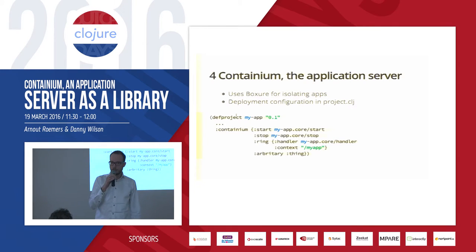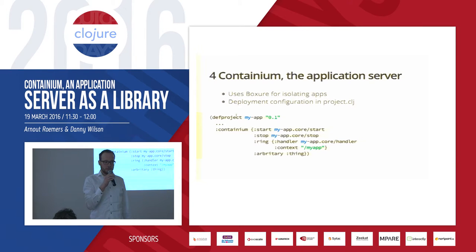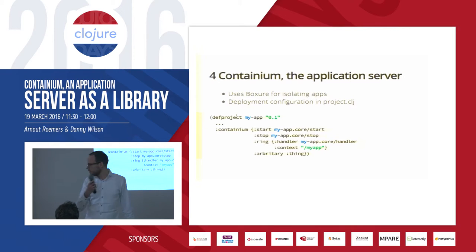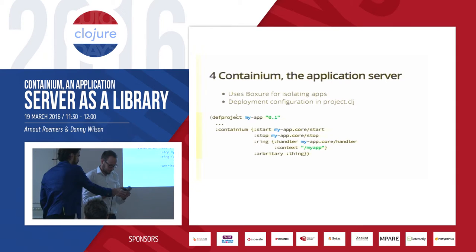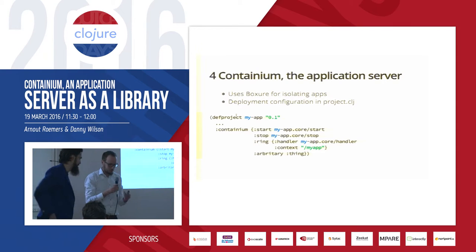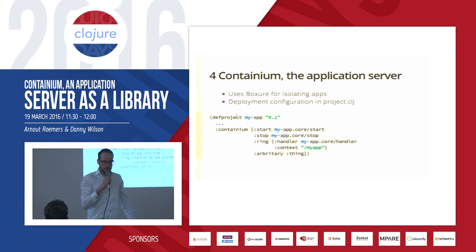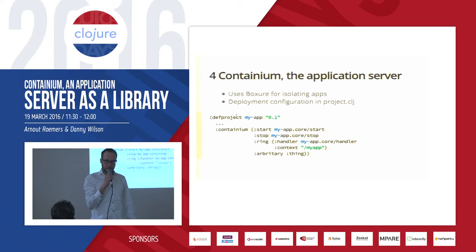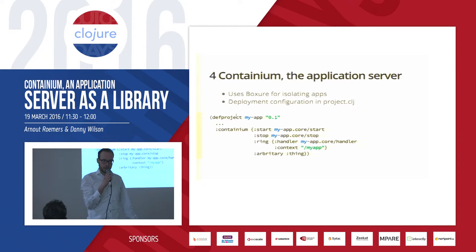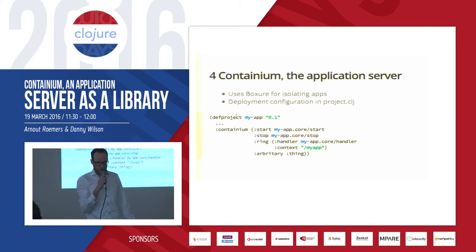Now that we have the Boxer library, we created an application server around it for managing your apps. Your deployment configuration can be done using the deployment descriptor in your Leiningen declaration. You supply a start function for your app, a stop function for your app, and maybe some ring handler stuff or context path.